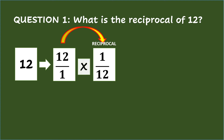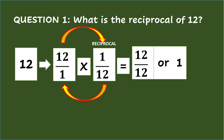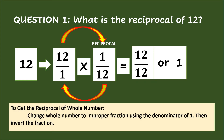Remember that when you multiply the number by its reciprocal, the product is always 1. So, multiplying the numerators 12 times 1 equals 12, and multiplying the denominators 1 times 12 equals 12. Therefore, 12/1 times 1/12 equals 12/12, or simplifying it is 1. To get the reciprocal of a whole number, change the whole number to an improper fraction using the denominator of 1, then invert the fraction.